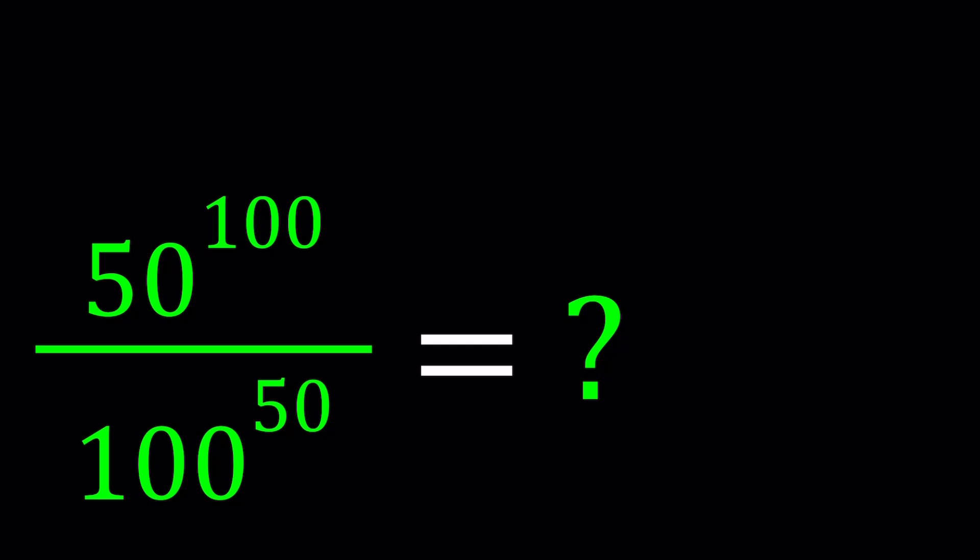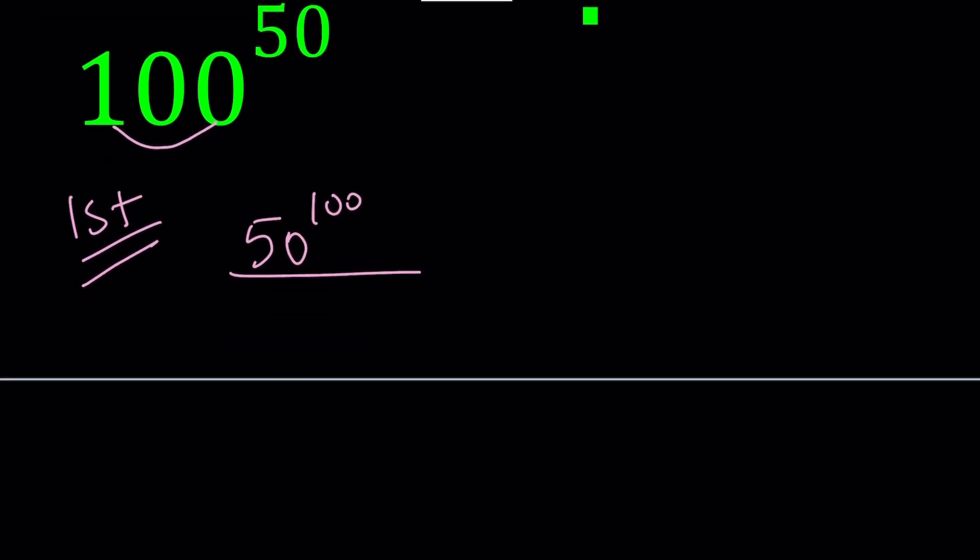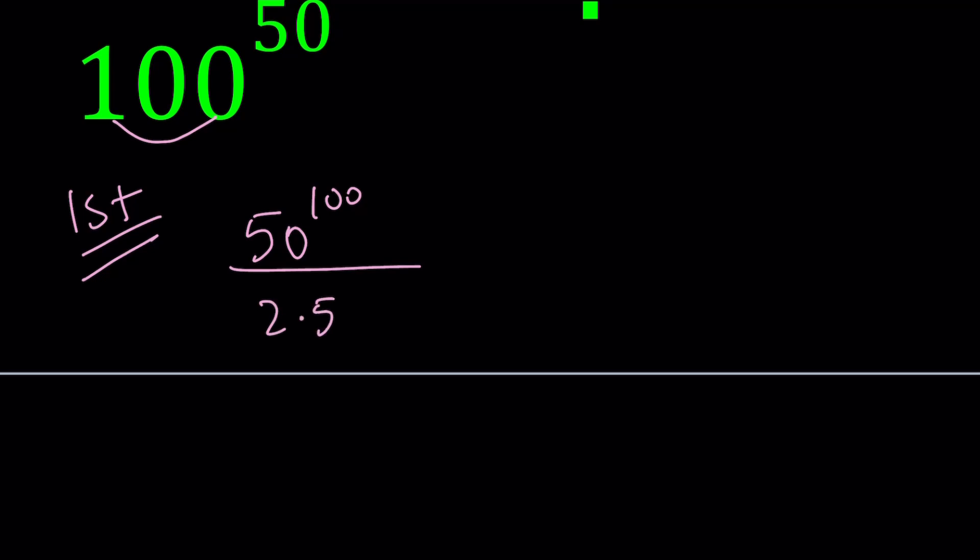I'll try to present more than one method. Let's start with the first one. For my first method, I noticed that 100, the base, is 2 times 50. So I'm going to split up the base at the bottom, the denominator. I'm going to write 100 as 2 times 50 and then raise it to the power 50.